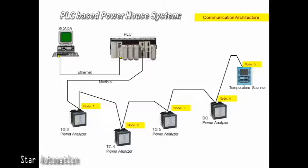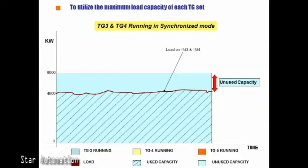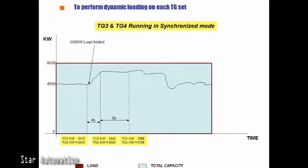As you can see in the video, when TG sets are running independently each TG set has some unused capacity. However, when TG sets are running in synchronized mode, the unused capacity is much larger and extra load can be added on the load bus bar. This is more clearly shown in the kilowatt graph, where you can also see the graph of kilowatt sharing in synchronized mode.